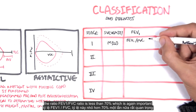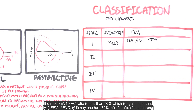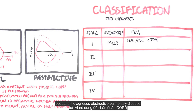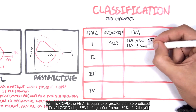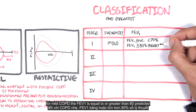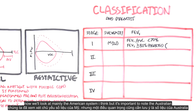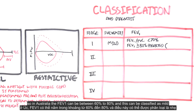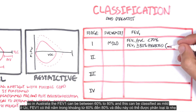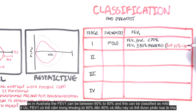The FEV1 over FVC ratio is less than 70 percent, which is important because it diagnoses obstructive pulmonary disease. For mild COPD the FEV1 is equal to or greater than 80 percent predicted. In Australia, the FEV1 can be between 60 to 80 percent and still be classified as mild.